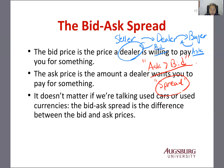It's like a used car. The dealer buys a used car from the previous owner paying the bid price, which is a low price, and then sells this car to a new owner at the ask price. The dealer gets the price difference, and that price difference is called the bid-ask spread.